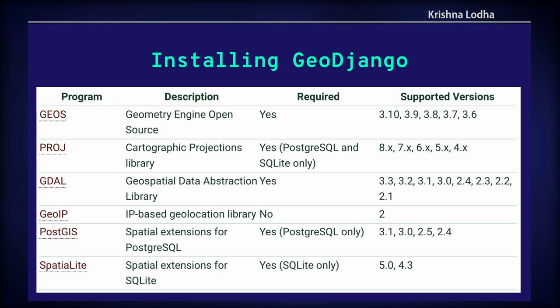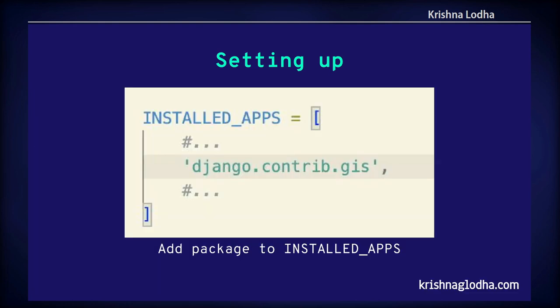To set up the GeoDjango project, you only need to add django.contrib.gis to the installed apps. As I said, everything is apps in Django, so whenever you install any library you need to mention it in the installed apps list. This is the most important setting, though when working on more detailed scenarios you can add more things to settings.py.